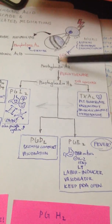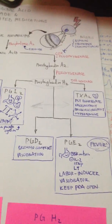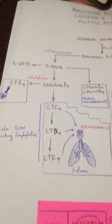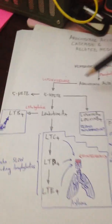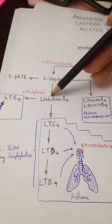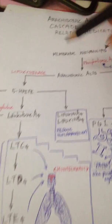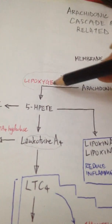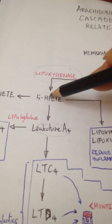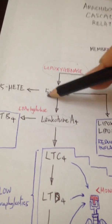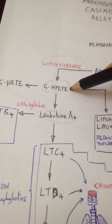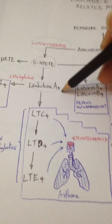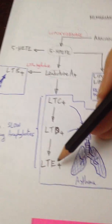Arachidonic acid can go into the other arm of the reaction, which is leukotrienes, basically the leukotriene pathway. From arachidonic acid, it can be converted by lipoxygenase into 5-HPETE, and this 5-HPETE can be broken down into leukotriene A4, leukotriene C4, leukotriene D4, and leukotriene E4.